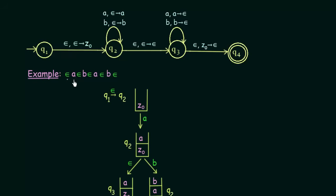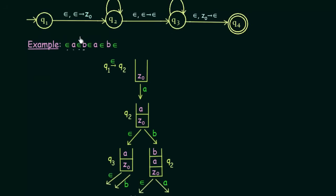After that, the next symbol we get is 'a'. We are in state q2 and in q2 if you get 'a' it just pushes 'a' to the stack without popping anything, and we remain in state q2. Now after reading this 'a', we have two options: we can either read epsilon or read 'b'. If we read epsilon in state q2, it goes to state q3 without pushing or popping anything, and the stack remains unchanged.